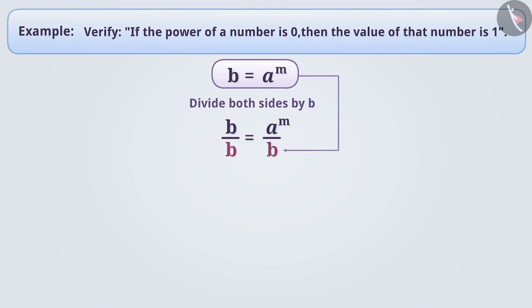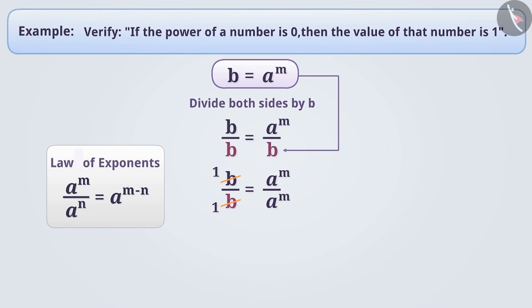On the right side, we can write the value of b as a to the power of m. Hence, b divided by b equals a to the power of m divided by a to the power of m. On the left side, b is being divided by the same number, so the result will be 1. On the right side, we can apply the law of division of exponents.